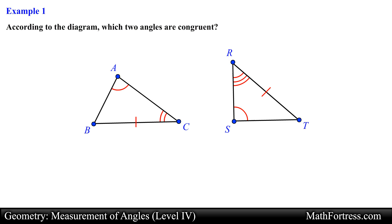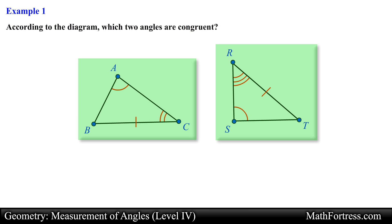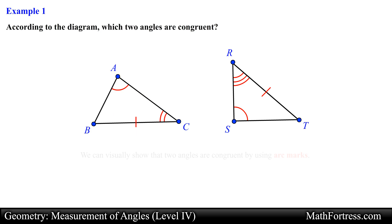According to the diagram, which two angles are congruent? In this problem we are given two triangles and we are asked to determine which two angles are congruent. Recall that we can visually show that two angles are congruent by using arc marks.